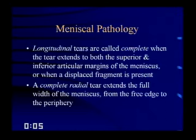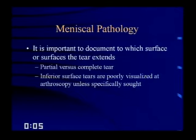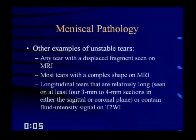It's important to document to which surface or surfaces the tear extends, which determines whether it's partial or complete, and alerts the orthopedic surgeon to inferior surface tears that may be poorly visualized unless specifically sought at arthroscopy. Other examples of unstable tears include any tear with a displaced fragment on MRI, most complex-shaped tears, longitudinal tears seen on at least three or four sagittal sections, and tears containing fluid signal intensity on T2-weighted images, indicating the tear is large enough to allow fluid entry.